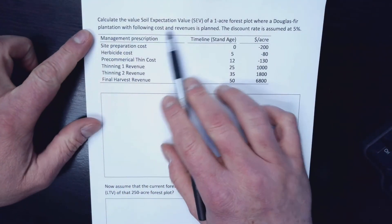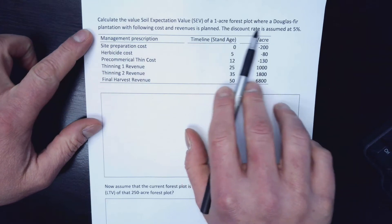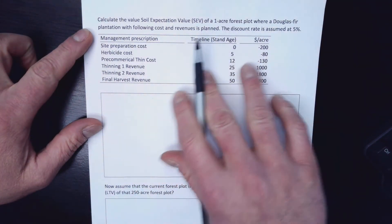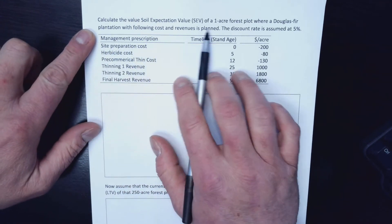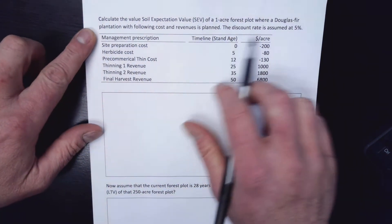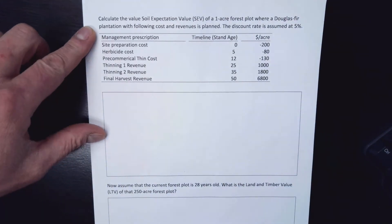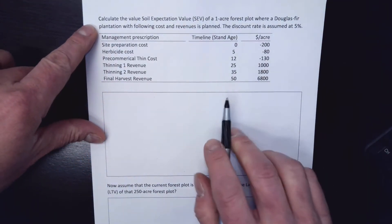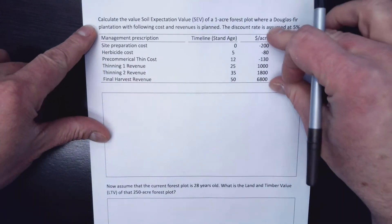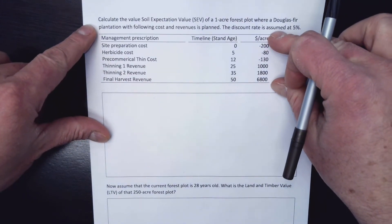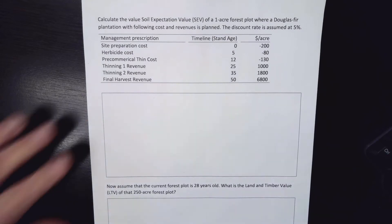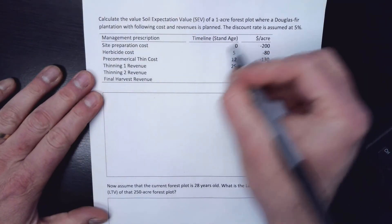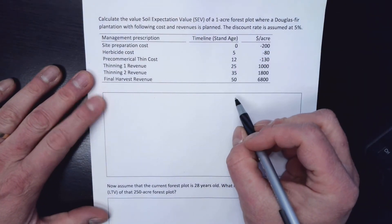Okay, we're going to calculate the soil expectation value of a one acre forest plot. We're just going to do it on a per acre basis with the following costs and revenues plan. Discount rate is 5%. So the soil expectation is the multiple rotations of doing this particular management on an acre of land, or the bare land value, or what an acre of dirt is worth.